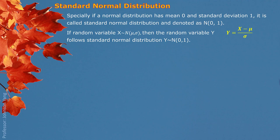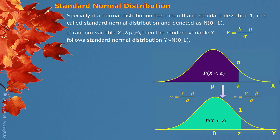For any random variable X following a normal distribution, we can take X, subtract the center value or average value, and then divide by the standard deviation. This process is called standardization. We can make random variable X standard, turning it into Y as the standard normal distribution. So X minus mu divided by sigma gives us the new random variable Y. If we use a specific value A, then A minus mu divided by sigma gives us the new value Z. Z is called the standard value of A.